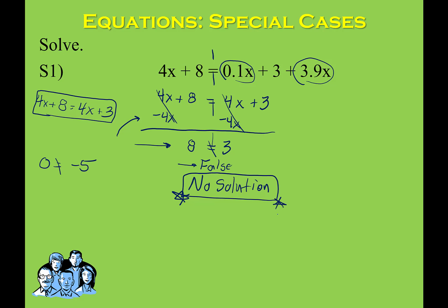There isn't any number that you can substitute in for x that will allow the left side and the right side of the equation to be the same. You are also welcome to have stopped at the second step because 4x plus 8 will never equal 4x plus 3 — you are adding different amounts to the same value for x on both sides, so they will never be equal.